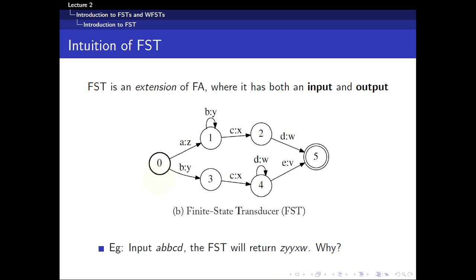Now, why is that? If you look here, if you take this transition, you require an a, you require a b, you require another b, you require a c, and finally require a d in order to reach the end state. So in the process, the transducer will return a z, two y's, an x, and a w here.